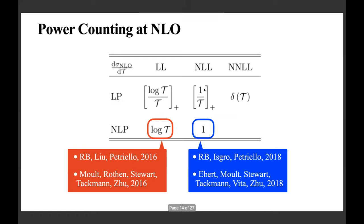To clarify the power counting at NLO: next-to-leading power leading log contributions are proportional to log(tau), and next-to-leading power next-to-leading log are the subleading ones. These pieces were missing and have been provided by two groups.